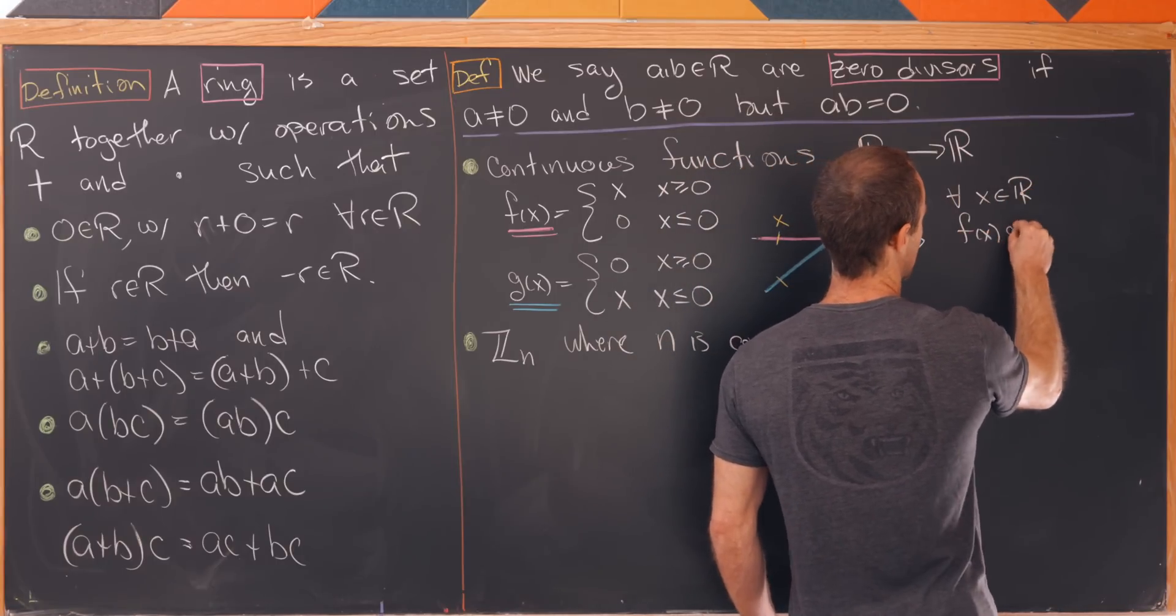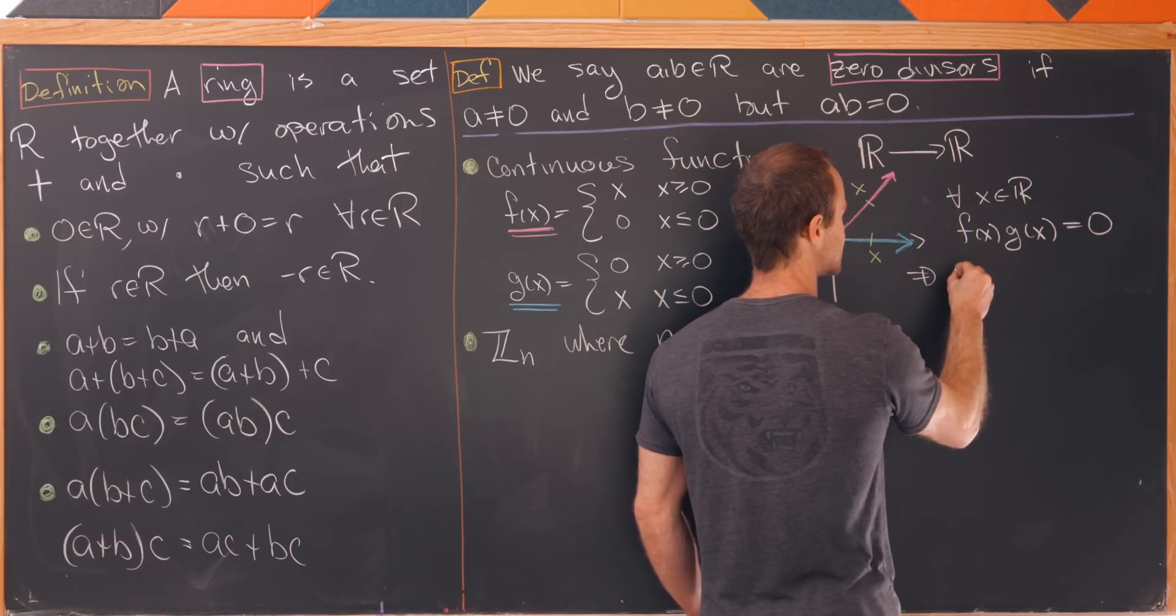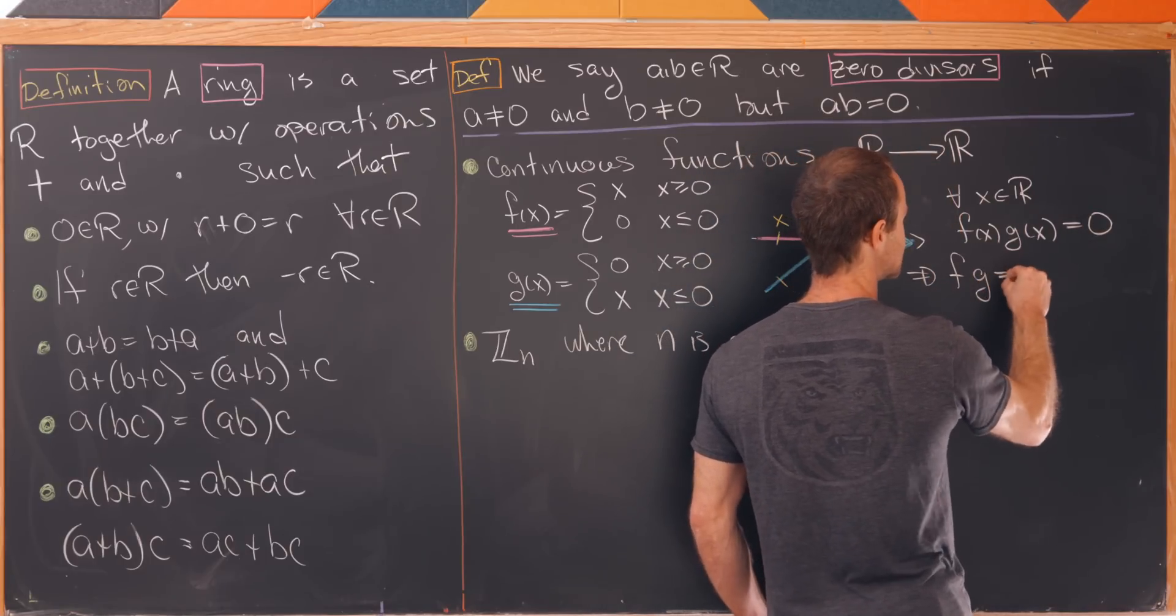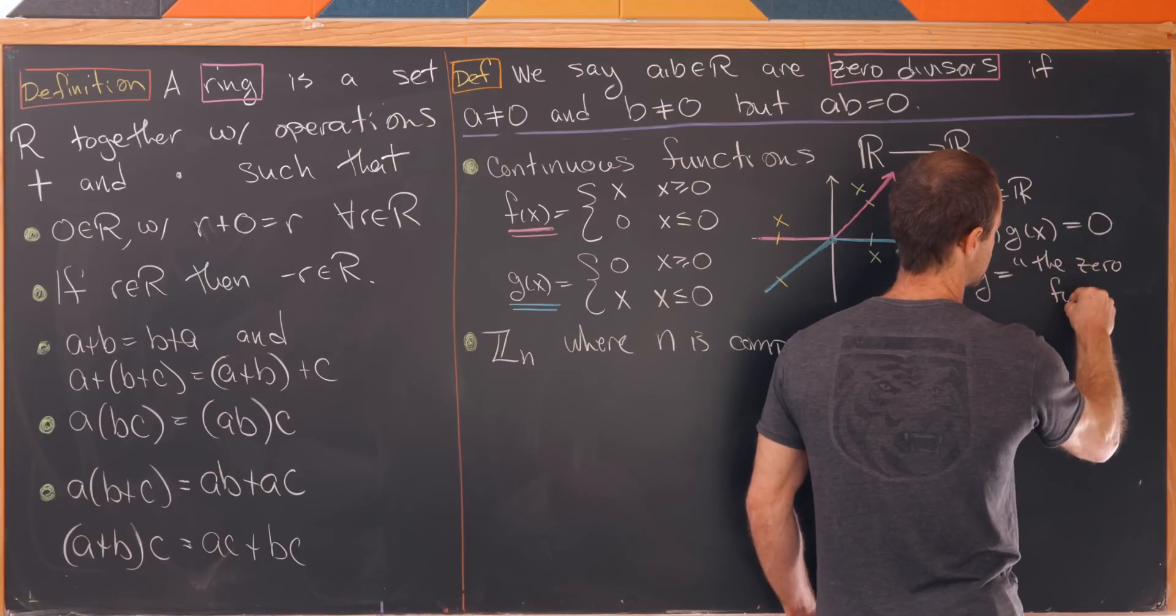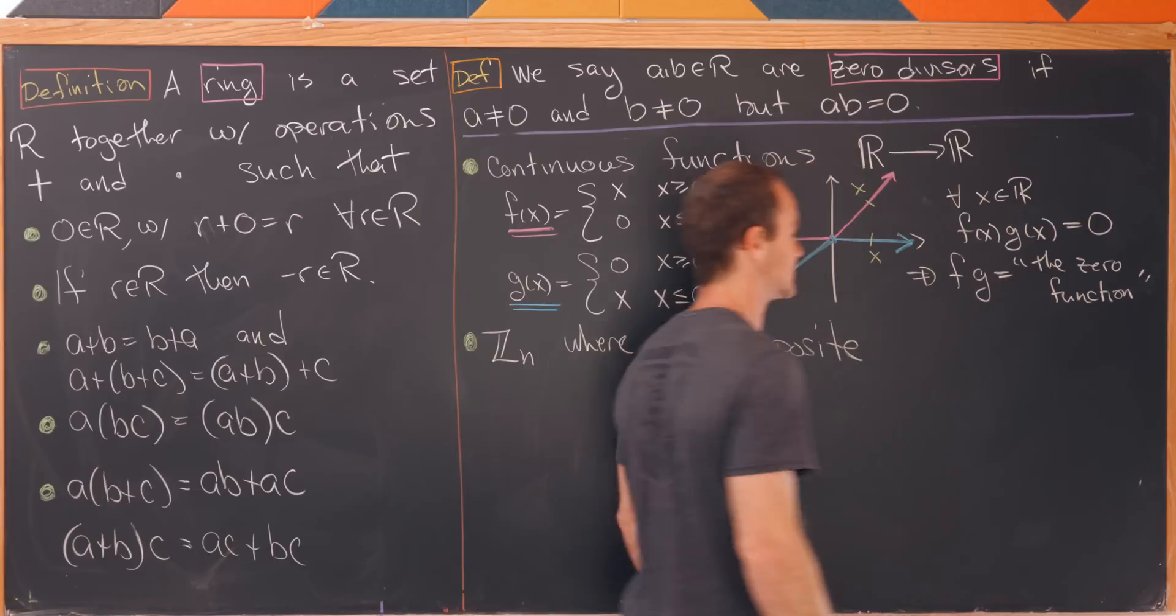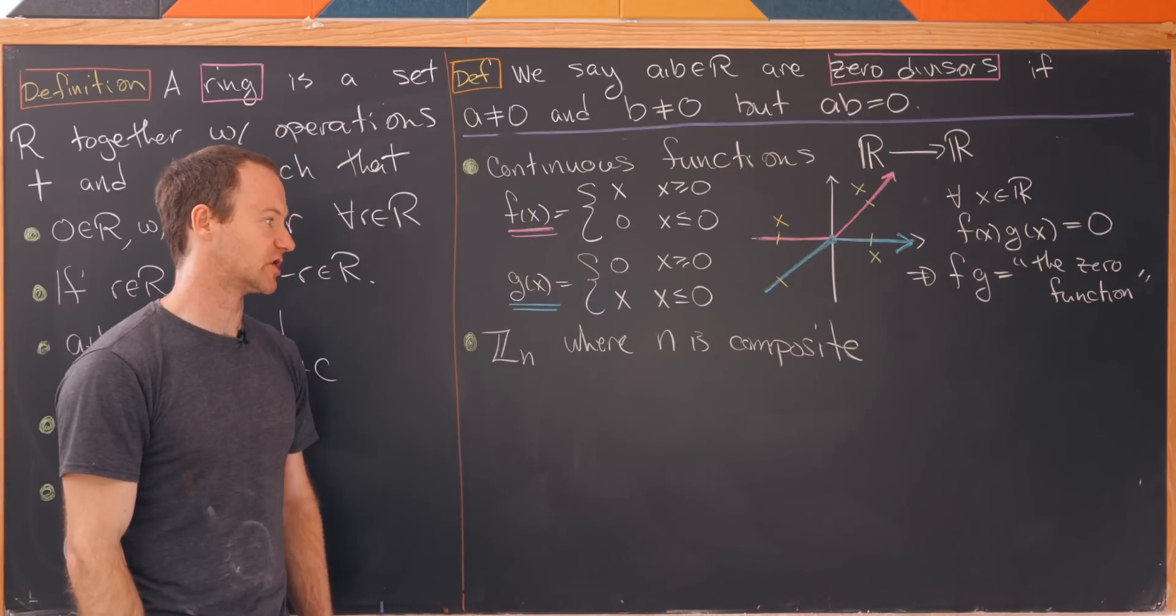So that tells us that for all x in R we have f(x) times g(x) equals zero. But what that tells us is that f times g is equal to the zero function. But that product is a zero function whereas neither of them are the zero function on their own.